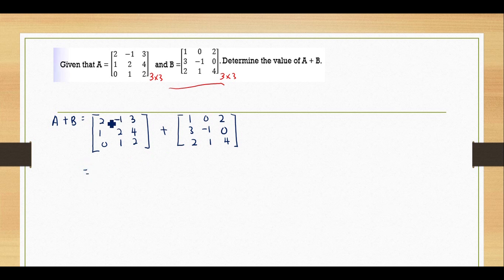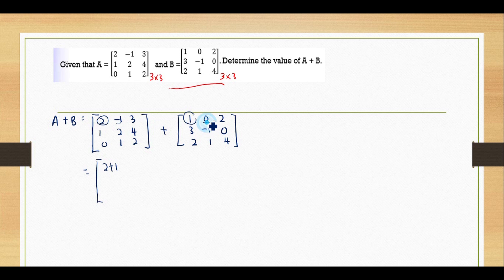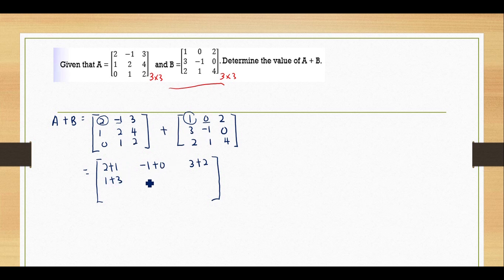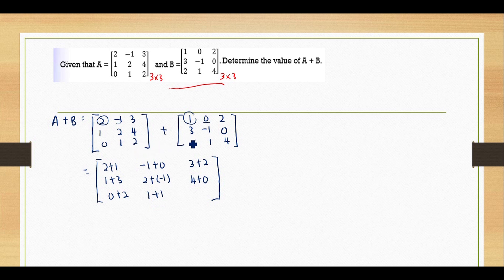The element (1,1) of A plus the element (1,1) of B: 2 plus 1. Then element (1,2) of A plus element (1,2) of B: negative 1 plus 0. Then 3 plus 2. Next row: 1 plus 3, then 2 plus negative 1, then 4 plus 0. Last row: 0 plus 2, 1 plus 2, 1 plus 1, and the last one 2 plus 4.